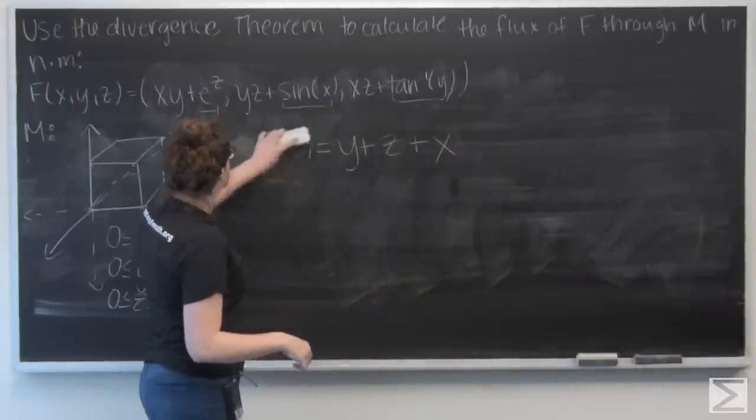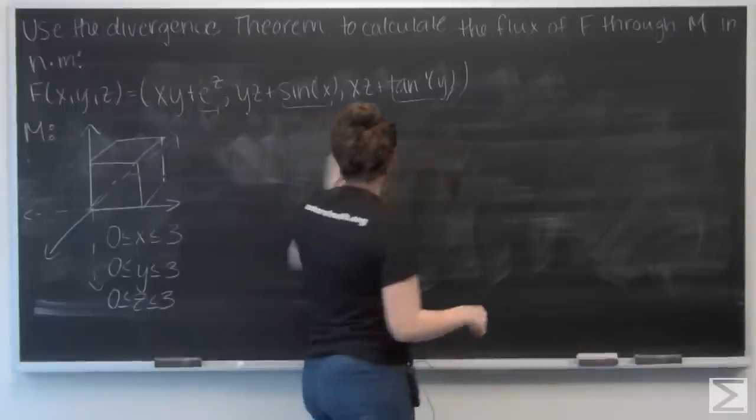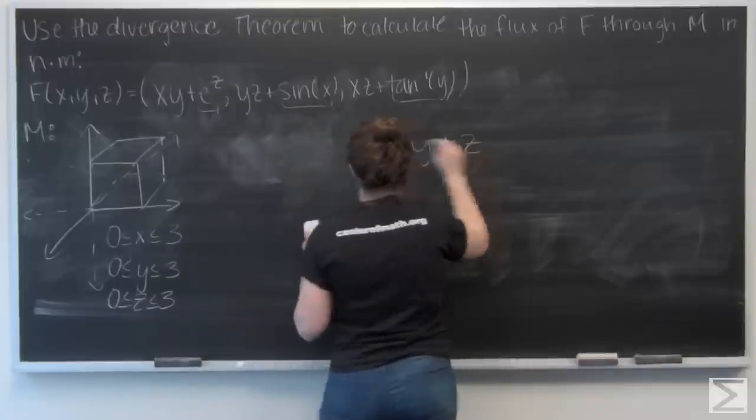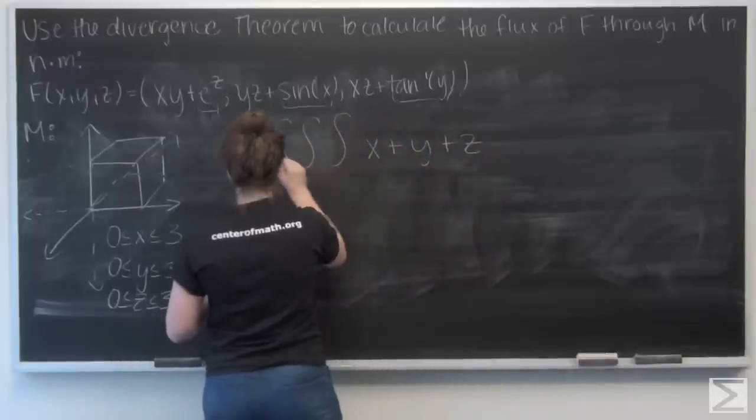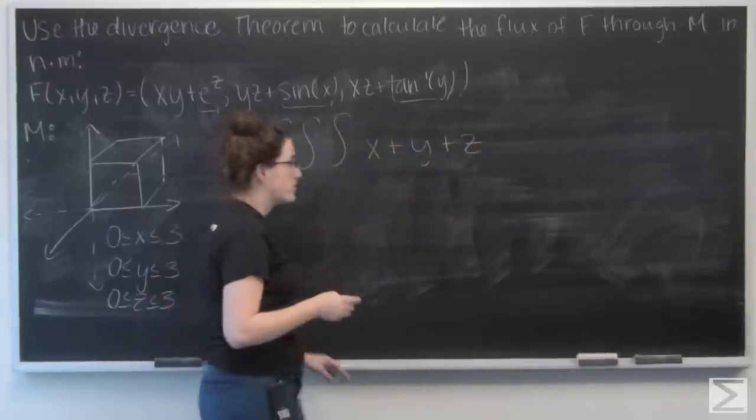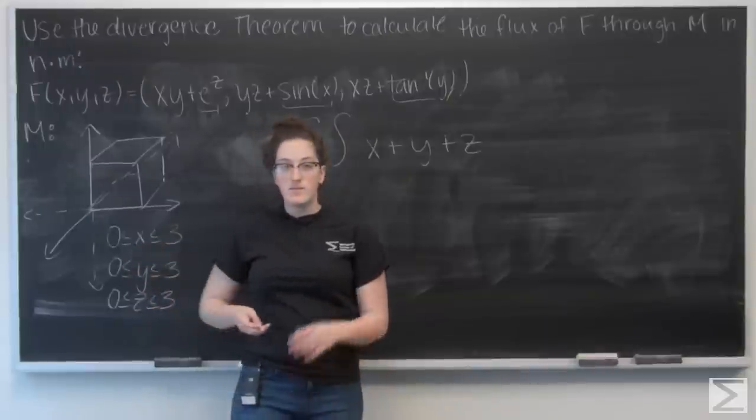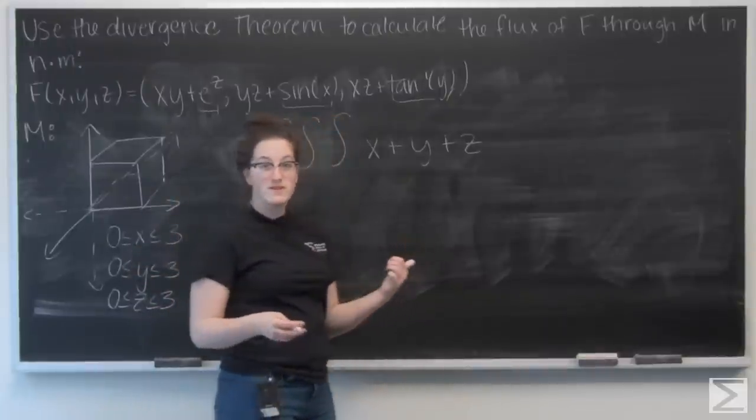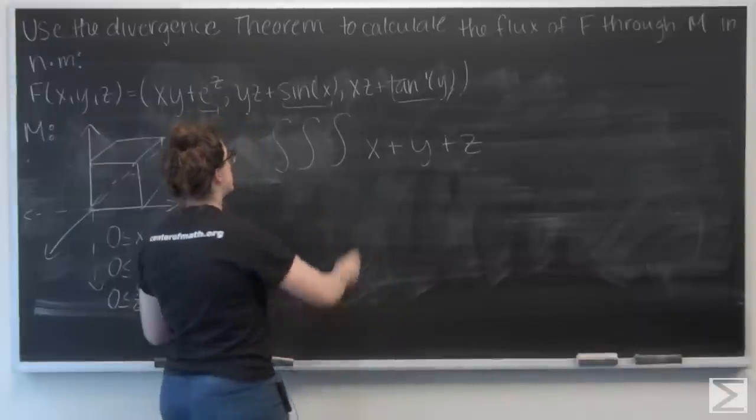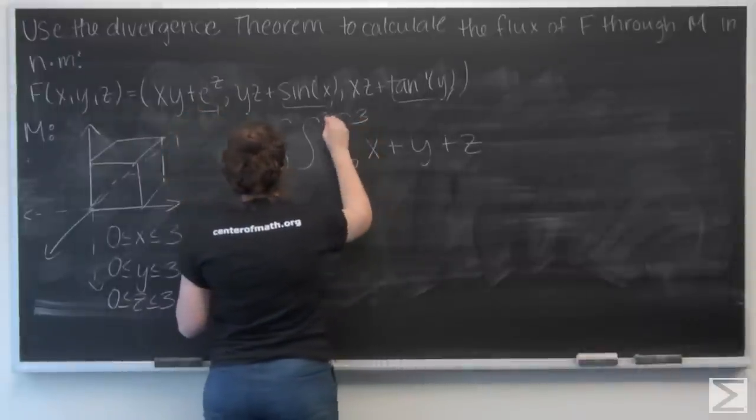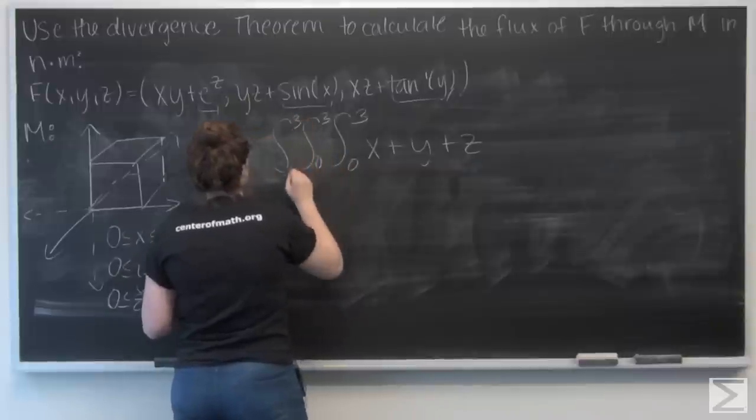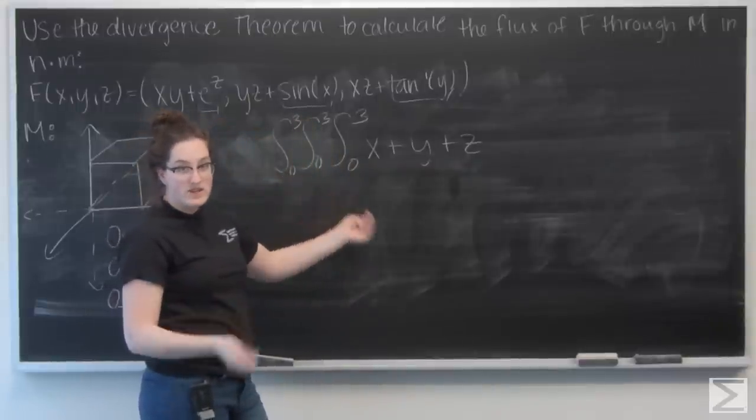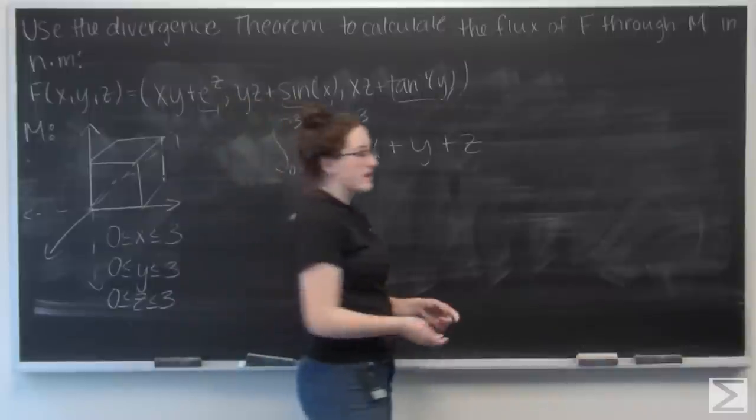And now let's go and integrate that over the volume of M. I'm given intervals for x, y, and z, they're all between 0 and 3, and that's going to make my cube. So I'm going to go ahead and set up this integral using those intervals. And since all my bounds of integration are constant, it doesn't matter which order I integrate in. I'm going to go z, then y, then x.